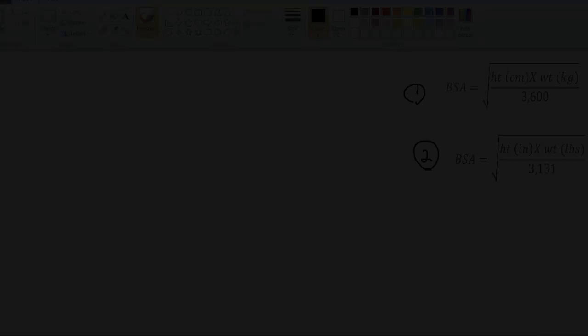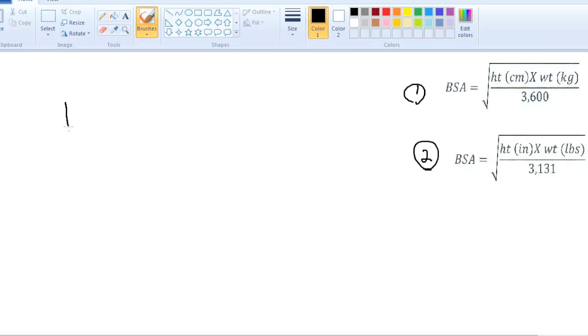Now, this is going to be the first example. Say you have a height of 36 inches and a weight of 40 pounds. So, which equation are we going to use? Clearly, you can see it has inches and pounds. The equations are the same. The only difference is the 3,600 and the 3,131. Again, like I say, everybody in the world uses centimeters and kilograms. So, think of a circle, 360 degrees, just add a zero. And here in the States, just think of New Year's Eve, which is December 31st, so 3,131. So, we're going to use the bottom number. We're just going to plug it into the equation.